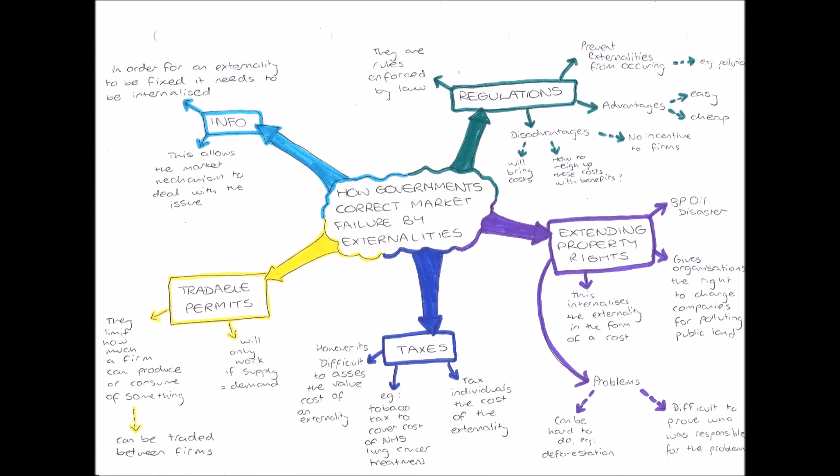Finally, we have tradable permits. These are pollution permits which limit how much a company can pollute, but they can be traded between businesses. Smaller businesses, where it may be cheap to cut pollution, can sell their spare permits to larger companies. This system is run by the European Union, and each year the EU reduces the number of permits available, so in essence firms are allowed to pollute less and less over time.